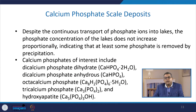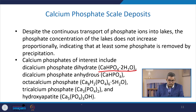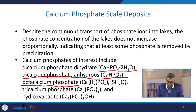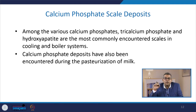Despite continuous transport of phosphate ions into lakes, the phosphate concentration does not increase proportionally, indicating that some phosphate is removed by precipitation. Calcium phosphates of interest include dicalcium phosphate dihydrate (CaHPO₄·2H₂O), dicalcium phosphate anhydrous (CaHPO₄), octa calcium phosphate (Ca₈H₂(PO₄)₆·5H₂O), tricalcium phosphate (Ca₃(PO₄)₂), and hydroxyapatite (Ca₅(PO₄)₃OH). Tricalcium phosphate and hydroxyapatite are the most commonly encountered scales in cooling and boiling systems.